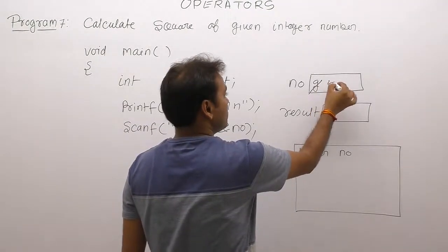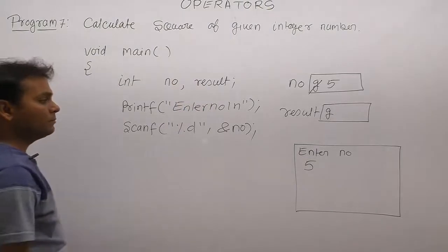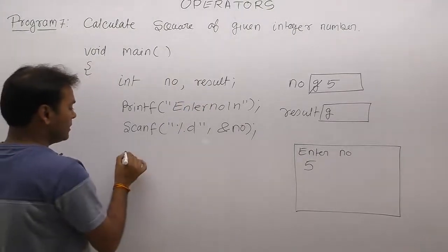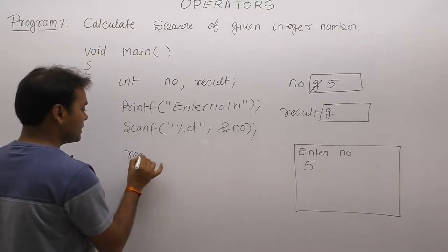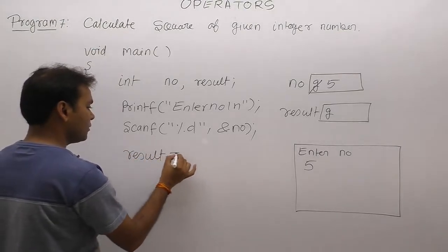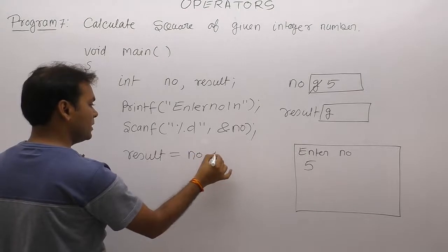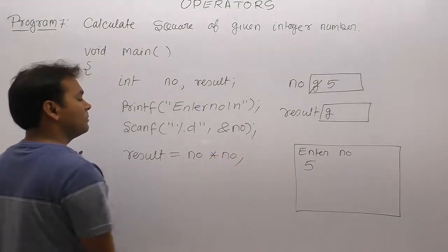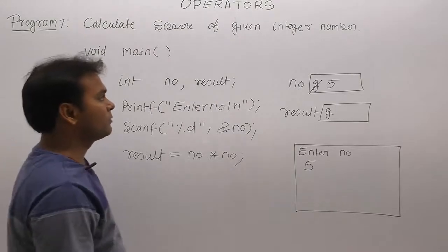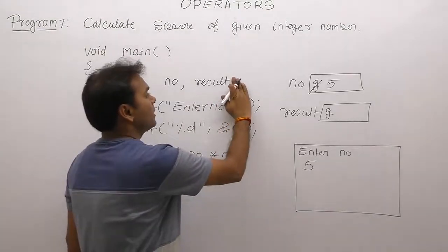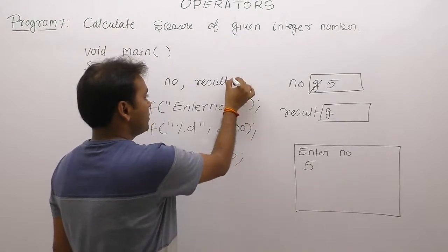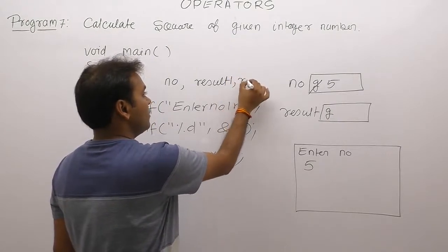Next one, square generate, simple formula: number multiply by number. This result is stored in a separate variable called as result. Similarly we can calculate in another format, assign to another variable. This is the problem: result1 or result2.